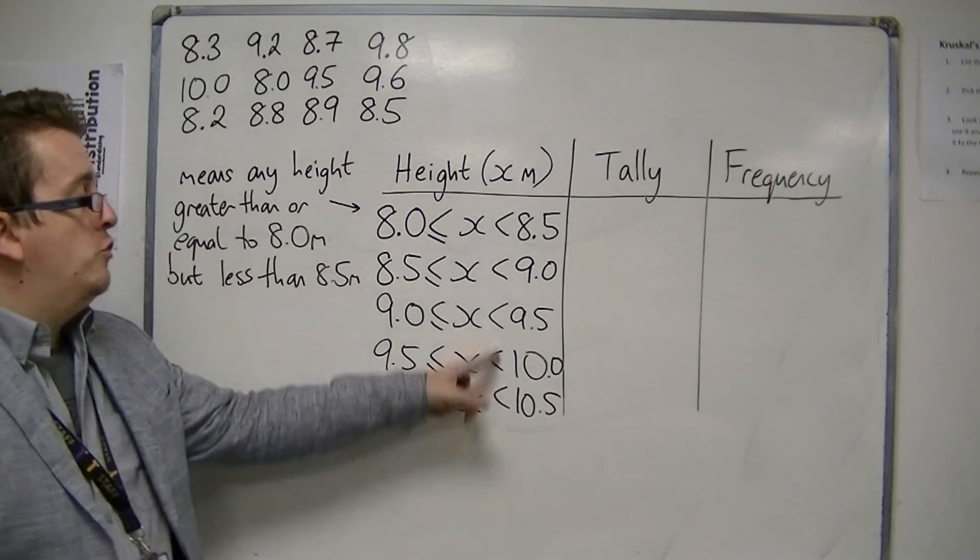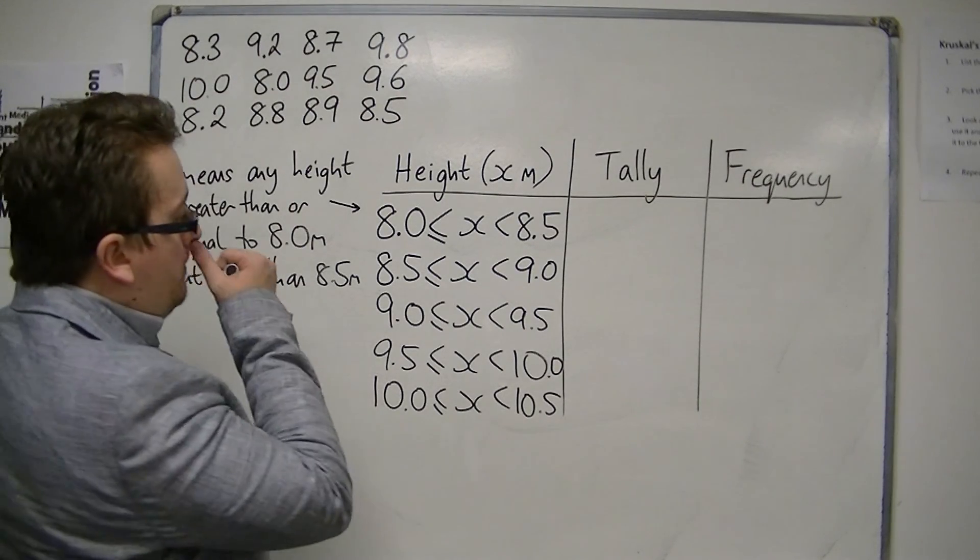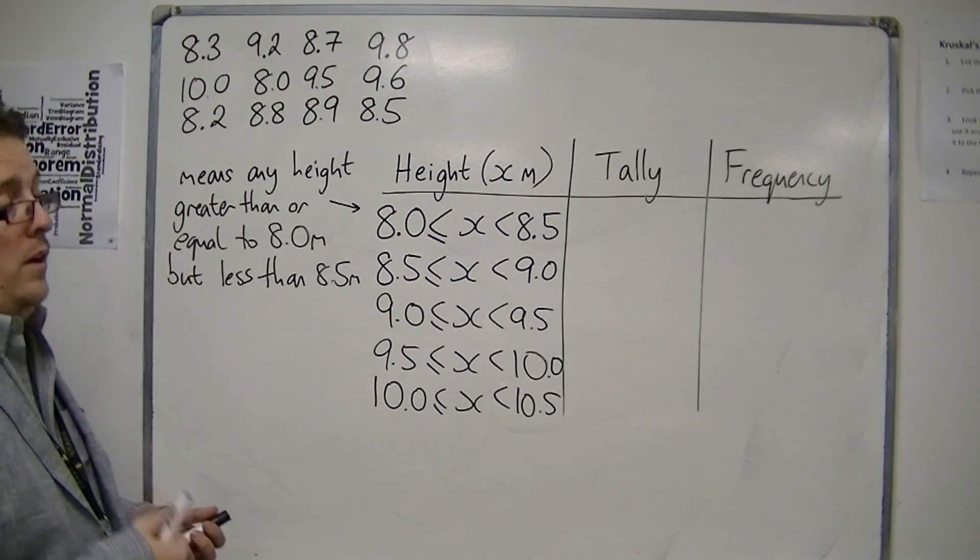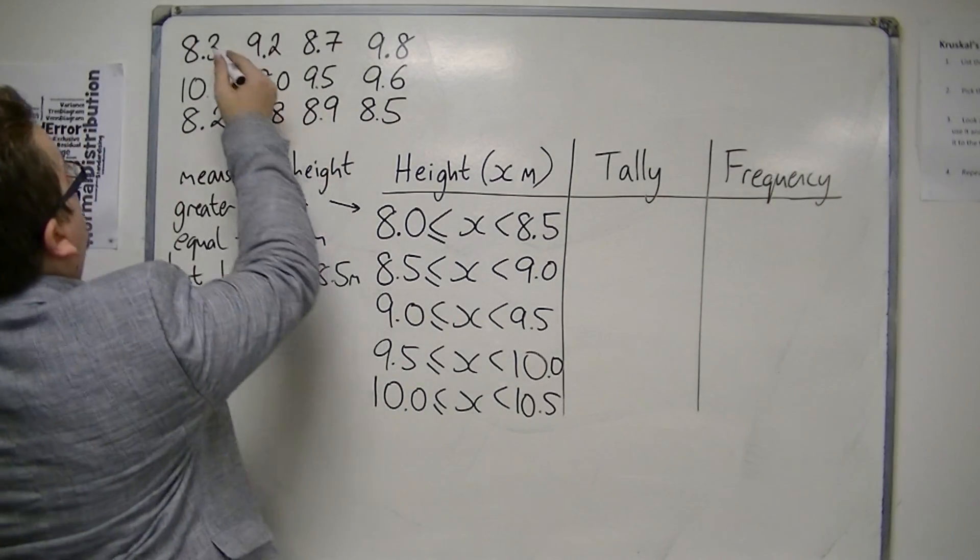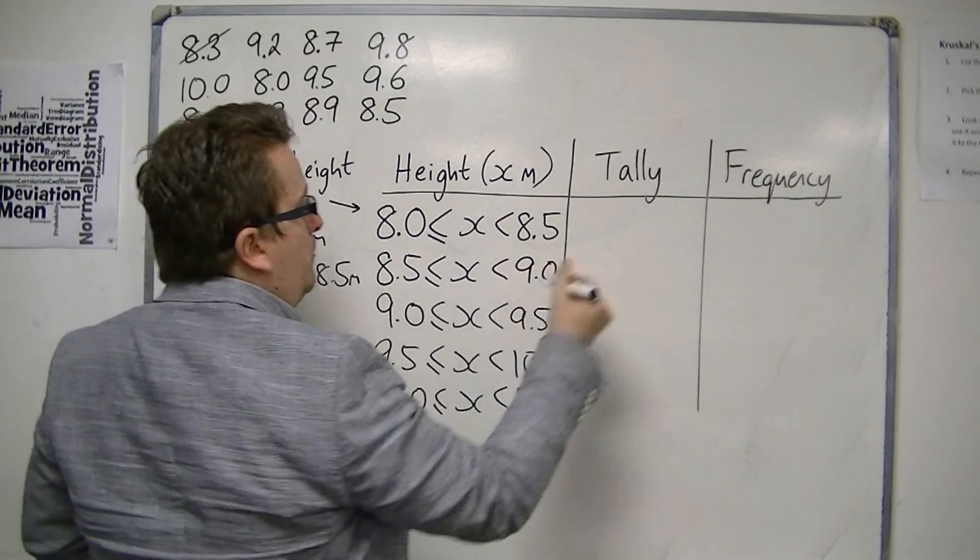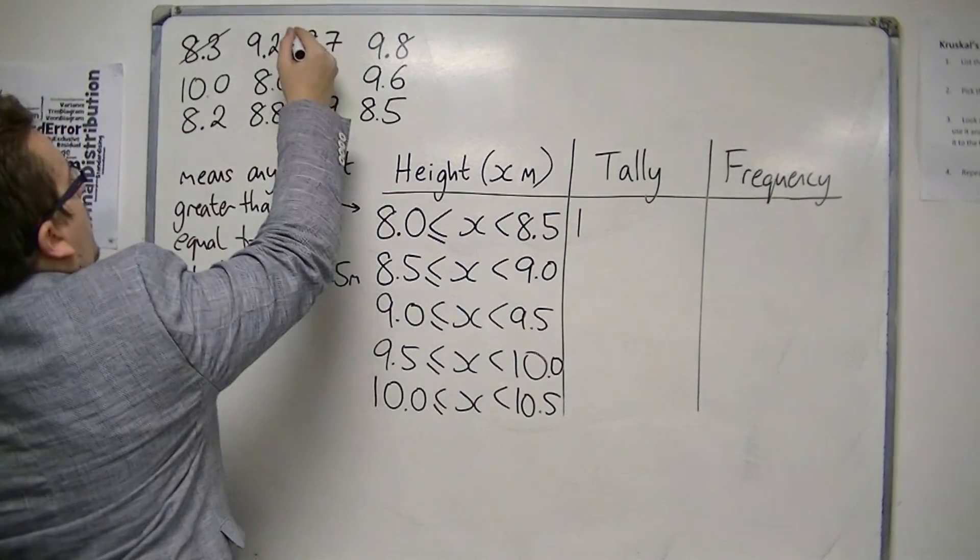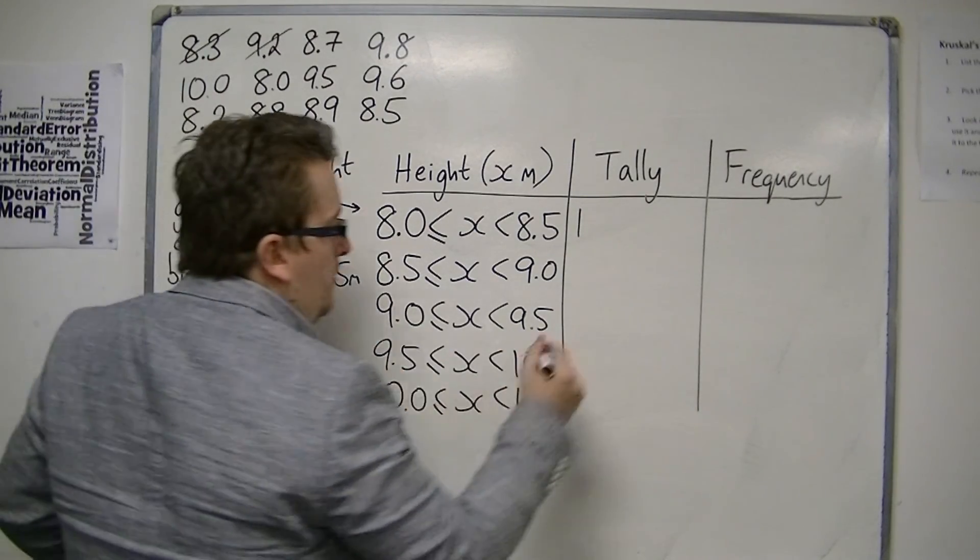So notice how I've made sure that the groups are the same size, all 0.5 wide. Now I can fill in my tally. I've got 8.3, which would go in this group, because that's 8 to 8.5. Then I've got 9.2, which would be between 9 and 9.5.